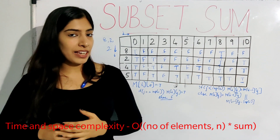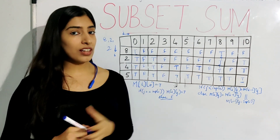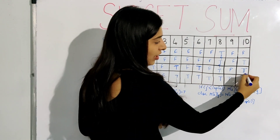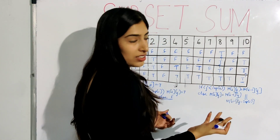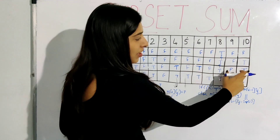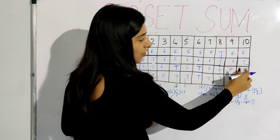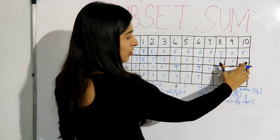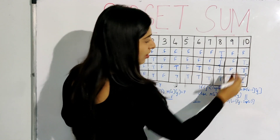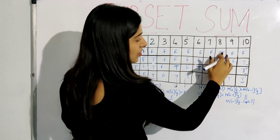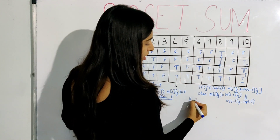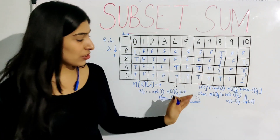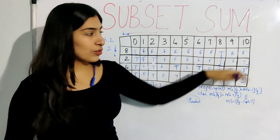If someone asks which numbers to include to get the sum 10, we can backtrace. Since the final cell got its value from the row above, we did not include 5. Going up, we also got the value from the row above, so we did not include 4. But for the [8,2] row, we did not get it from directly above — we included 2. So 2 is in our answer. We then go back 2 steps, and that cell got its value from the top, meaning we included 8. So 8 and 2 is our final answer to get the sum 10.